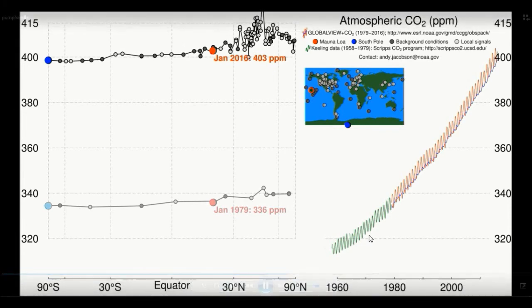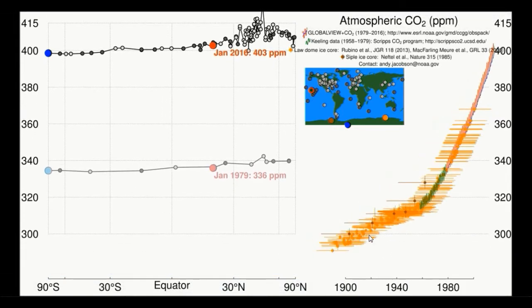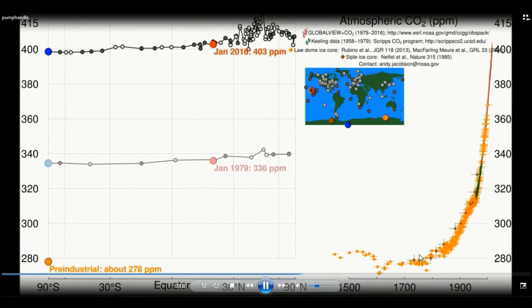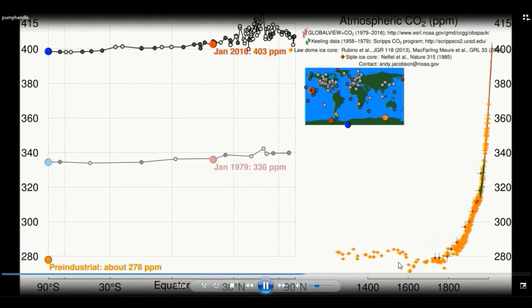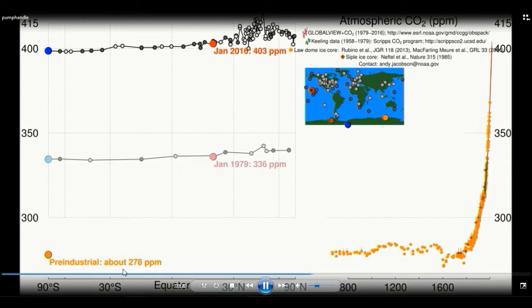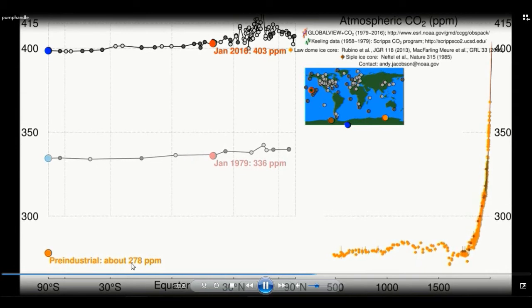Now we are going to see here is data from an ice core going backwards in time to pre-industrial times. In pre-industrial times concentrations were much lower.